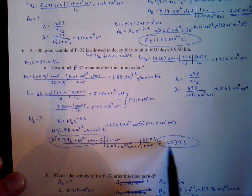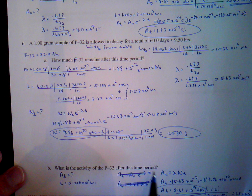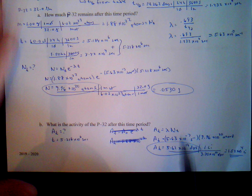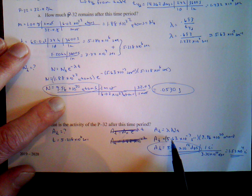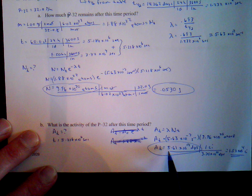For the activity of phosphorus-32 after this time period: we use the activity equation with 9.96 times 10 to the 20 atoms and the decay constant of 5.63 times 10 to the minus 7 per second. We get 5.61 times 10 to the 14 decays per second, which converts to 1.52 times 10 to the 4 curies.